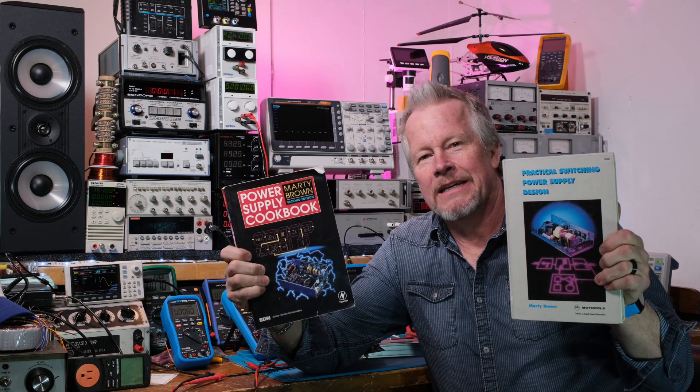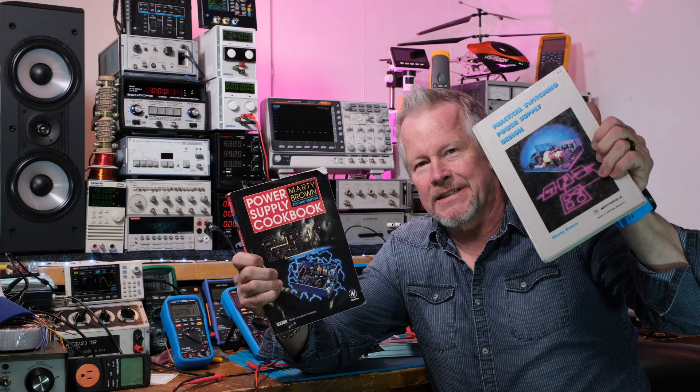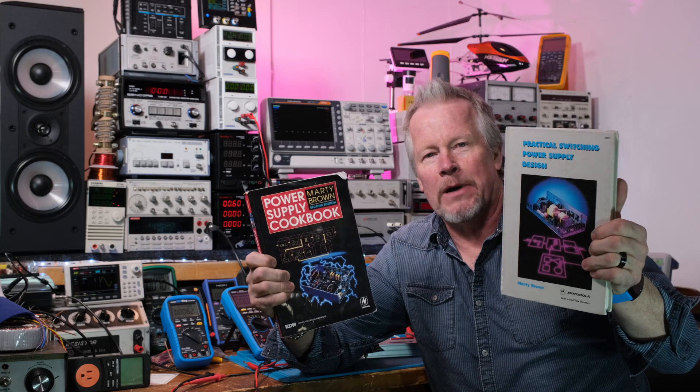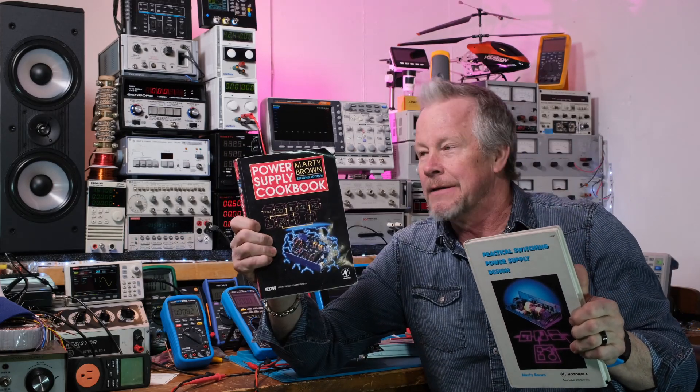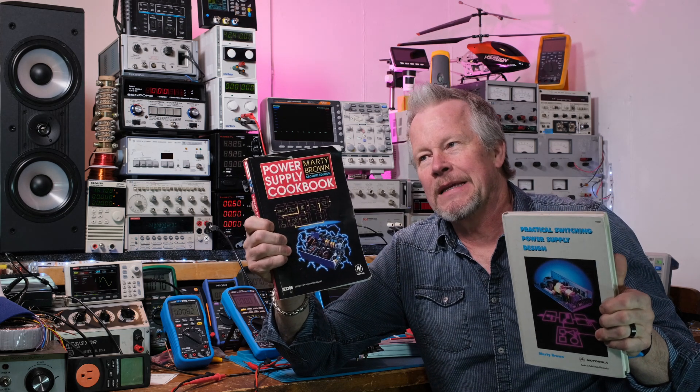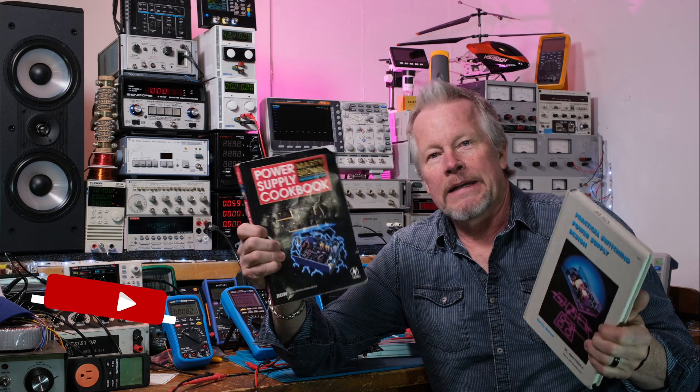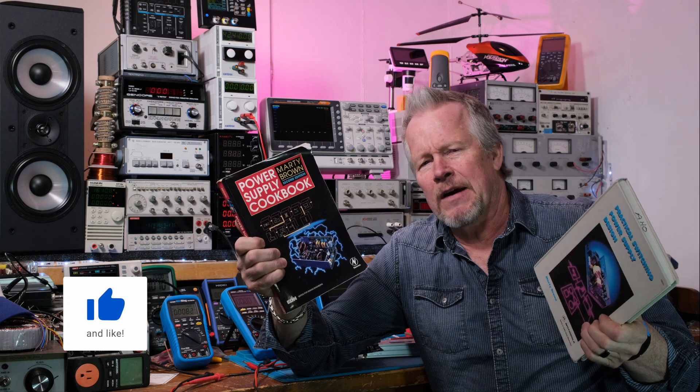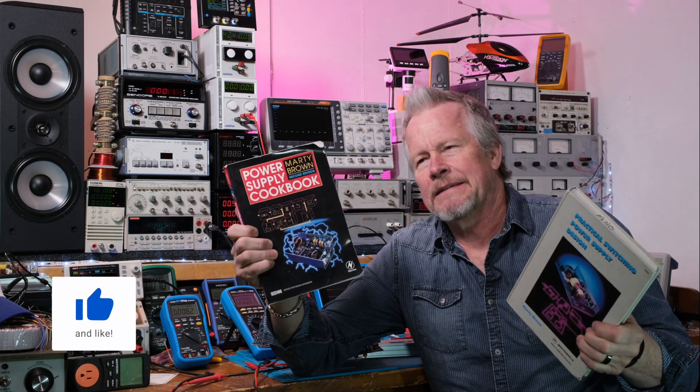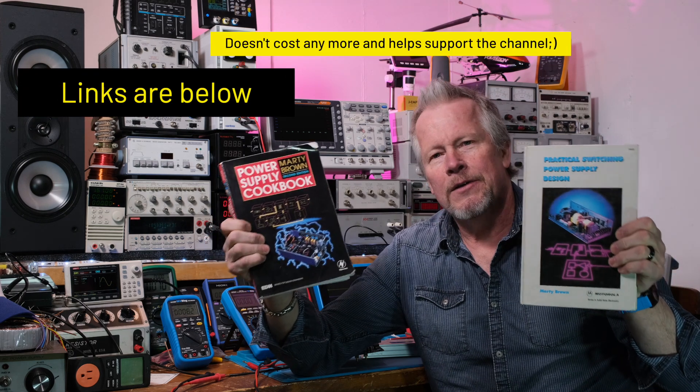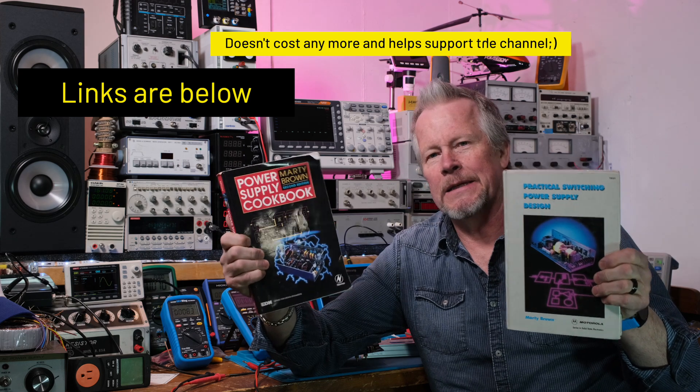Today I want to do a quick book review of Marty Brown's books. This is the first edition, still a really good book. You can find this one at low prices, especially used. And this one retails $70 on Amazon, but you can find it in the Kindle version for just over $50, like $55. There's used copies for $30 to $50. So they're relatively inexpensive books.